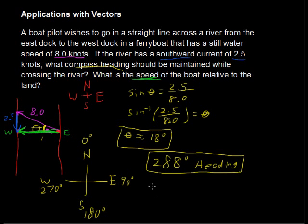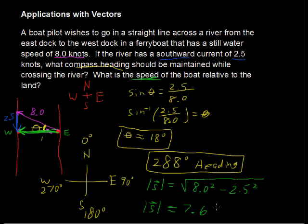So I'm going to say the absolute value of, just to use the notation of vectors, or the magnitude of the speed, equals the square root of 8.0 squared minus 2.5 squared. That's just Pythagorean theorem, just to find a missing leg. Then that magnitude is approximately, I'm going to be rounding here, 7.6 knots.